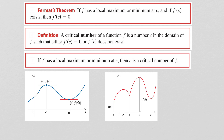So now let's define critical numbers. A critical number of a function f is a number c in the domain of f such that f prime of c is zero or f prime of c does not exist. Looking at the diagram, x equals b, x equals d, and x equals e are all critical numbers because the slope of the tangent line is zero. And x equals c is also a critical number because f prime of c does not exist. All of these are important because you have local maximums and minimums at all of these points.